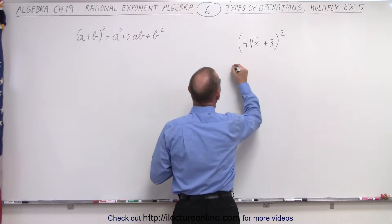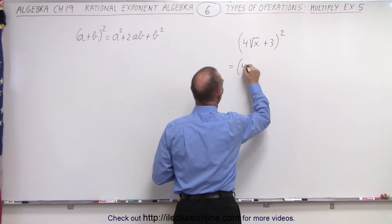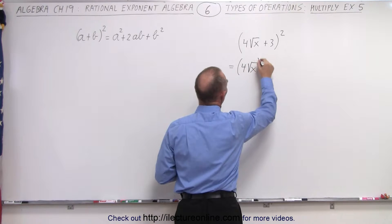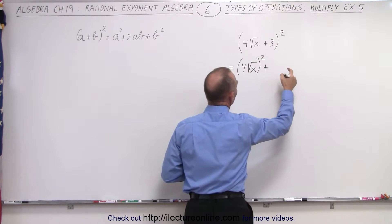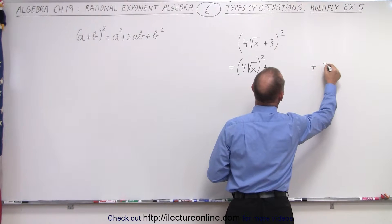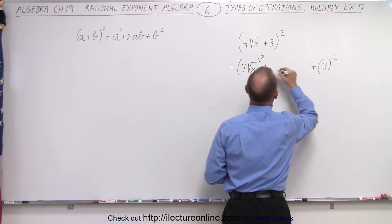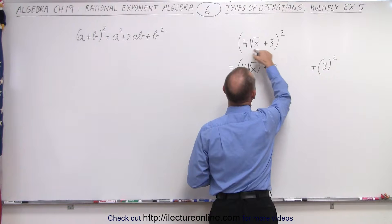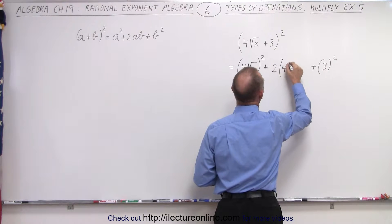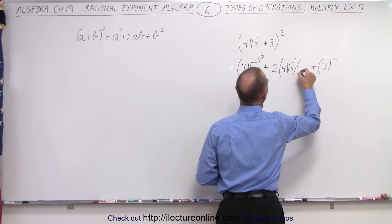So this can be written as the first term squared. So that's 4 times the square root of x, quantity squared, plus the last term squared, that would be 3 quantity squared, plus twice the product of the two. That would be 4 times the square root of x times 3.